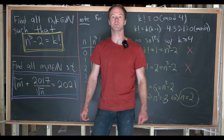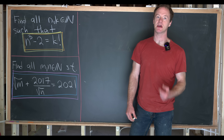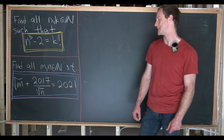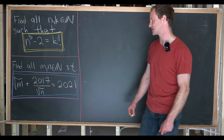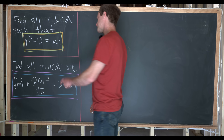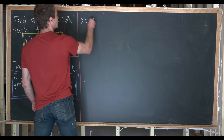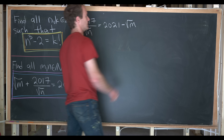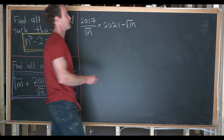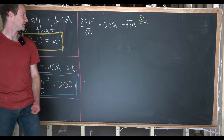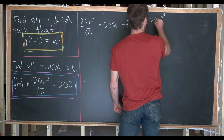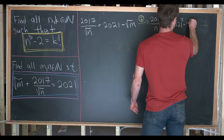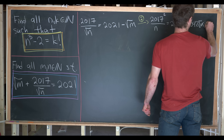Now let's look at the second problem: find all natural numbers m and n such that the square root of m plus 2017 over the square root of n equals 2021. The first thing to do is rearrange to get rid of the square roots as much as possible. We can rearrange to get 2017 over the square root of n equals 2021 minus the square root of m, then square both sides. The left-hand side becomes 2017 squared over n, and the right-hand side becomes 2021 squared minus 4042 times the square root of m plus m.